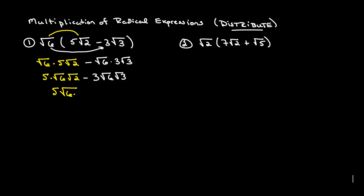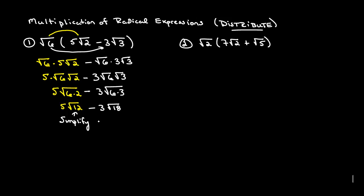So this will give us 5 square root of 6 times 2 minus 3 square root of 6 times 3. Now what we should do is take these back values and simplify them or reduce them. So we'll simplify this square root of 12 and we'll also do the same thing to the square root of 18. So we've got 5 times the square root of 4 times 3 minus 3 times the square root of 9 times 2.